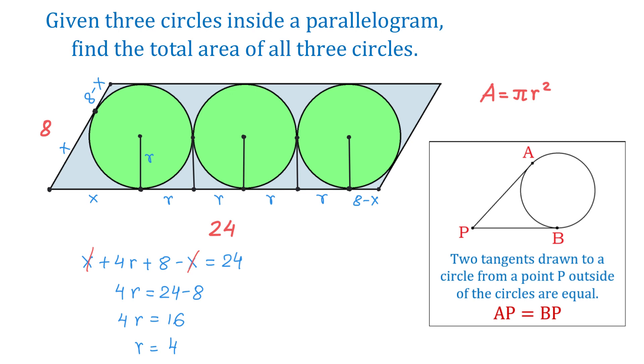Once we have the radius, let's find the total area of all three circles. The total area will be 3 times pi times 4 squared. And 3 times 16 is 48, so the total area will be 48 pi square units.